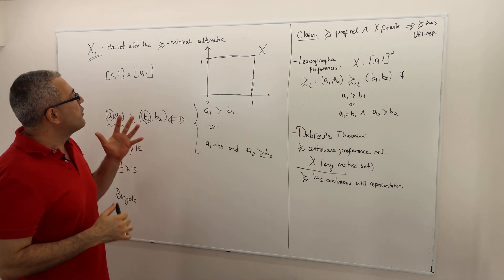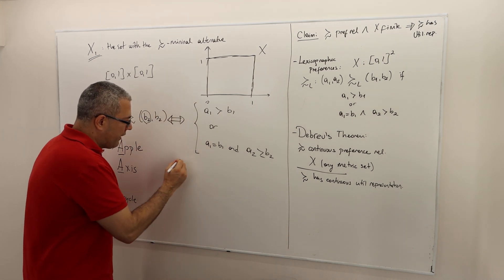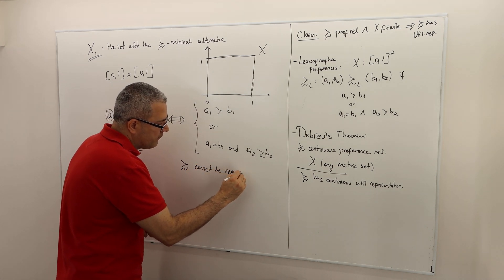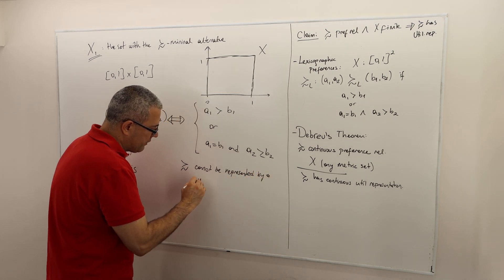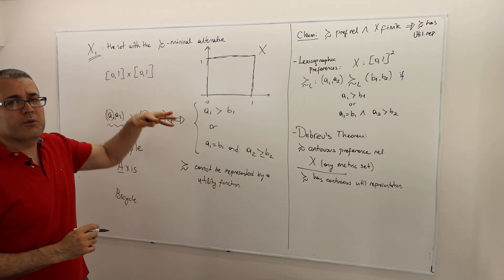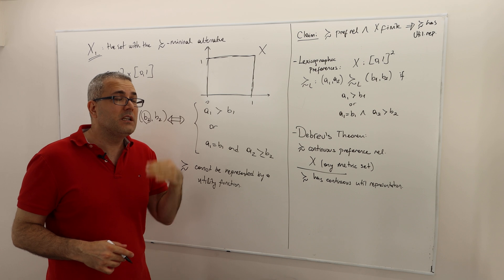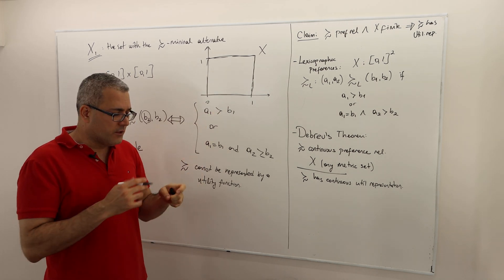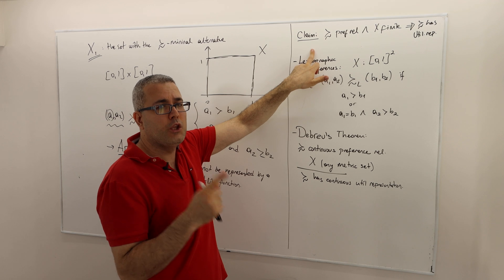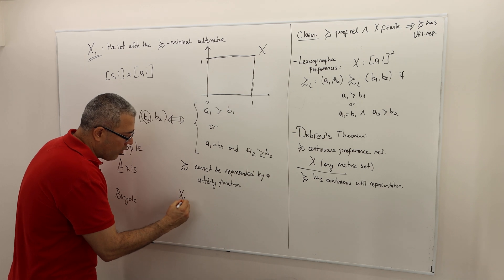One key result is that this preference relation cannot be represented by a utility function. The domain of this preference relation is not finite — there are uncountably many alternatives in this set. Therefore, you cannot use the approach we used to prove the finite case, meaning the idea of creating x1, x2, and so on.